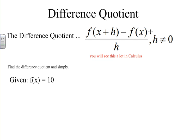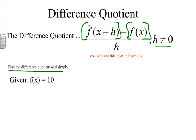This is the difference quotient: f of x plus h minus f of x, all over h. There are other forms that the difference quotient can come in, but this is one of them — using function notation. f of x plus h minus f of x, all over h. Obviously h can't equal zero. What students have to understand is that when we want to simplify or find the difference quotient, we have to understand what it is asking.